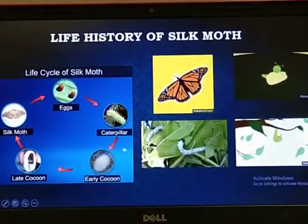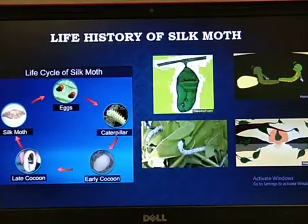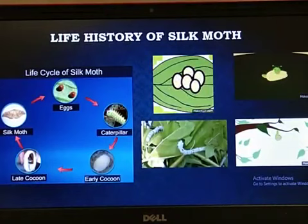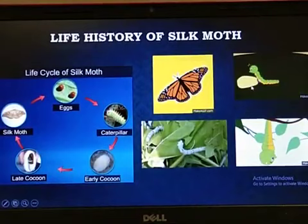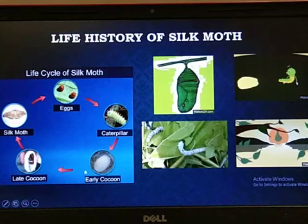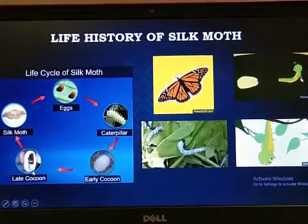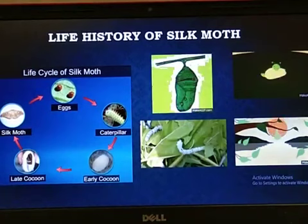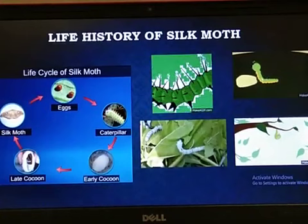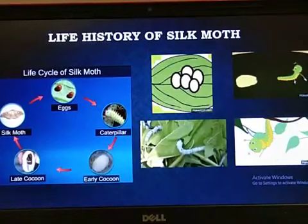During these movements, the caterpillar secretes fibers made of a protein which hardens on exposure to air and becomes silk fiber. The caterpillar completely covers itself with this silk fiber — this covering is known as a cocoon. This is an early cocoon, and as the process completes, it becomes a late cocoon. The further development of the moth continues inside the cocoon. Silk fibers from the cocoon are used for weaving silk cloth.